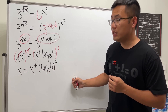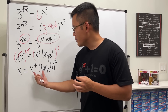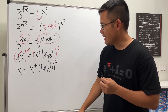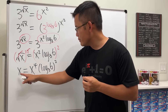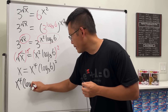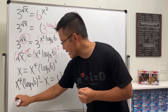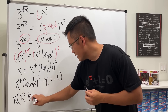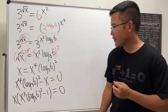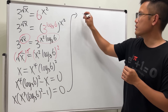You could divide both sides by x and note that x equals zero is a solution, but it's better to factor properly. So let's move everything to one side: x to the fourth power times (log base 3 of 6) squared minus x equals zero. Factoring out x gives: x times [x cubed times (log base 3 of 6) squared minus 1] equals zero.